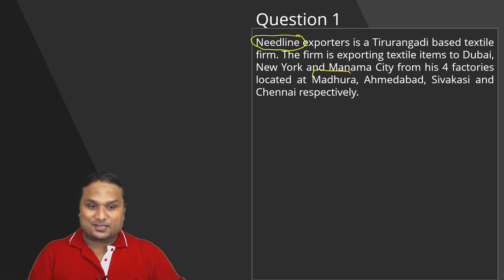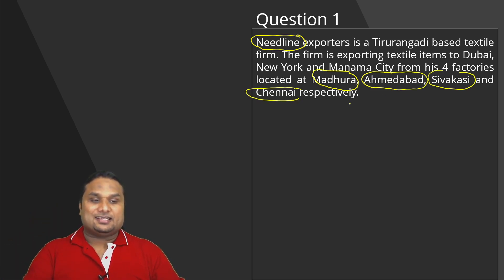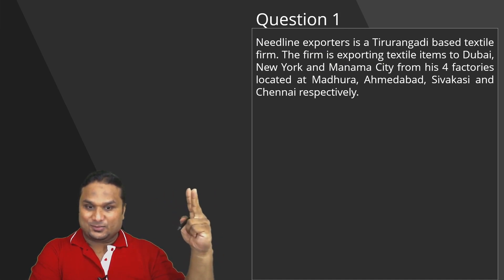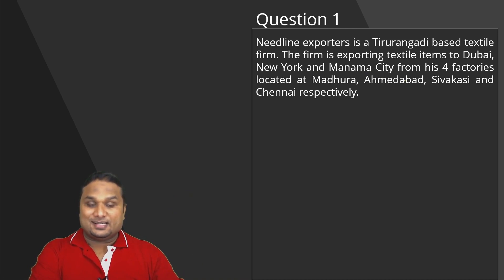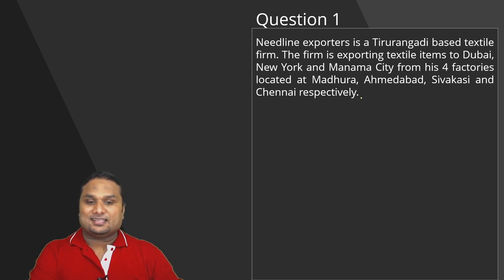Mr. Mohammad Baba is the Managing Director of Needline Exporters. He has a factory in Madura (Tamil Nadu), another in Ahmedabad (Gujarat), one in Shivagashi, and one in Chennai. So in four locations across the country he has factories. He exports textile items to three destinations: Dubai, New York (United States), and Manama City (Bahrain).